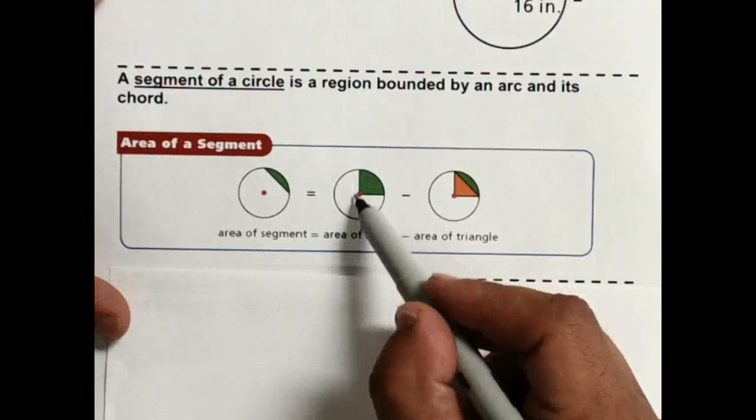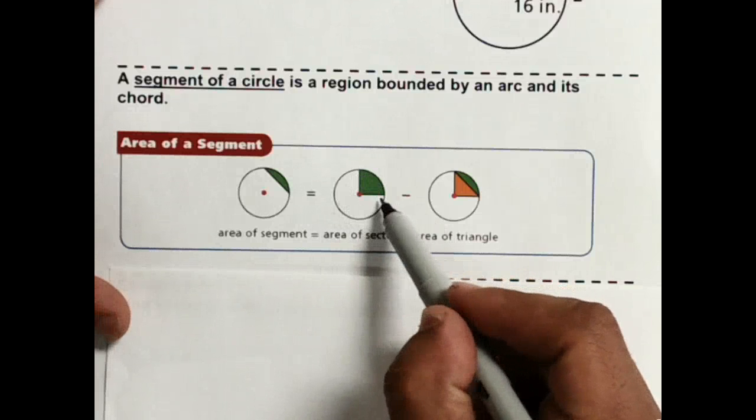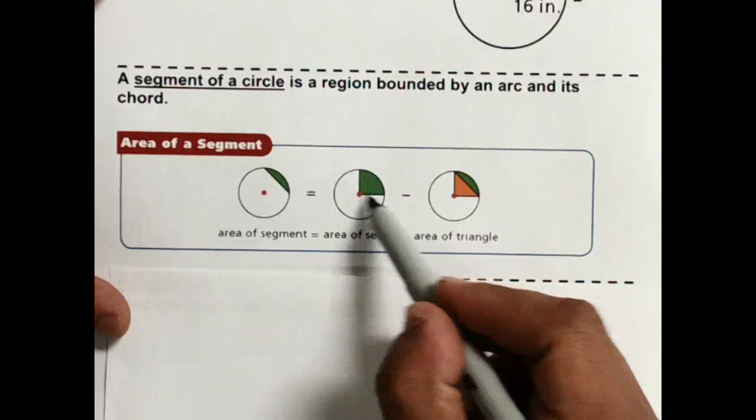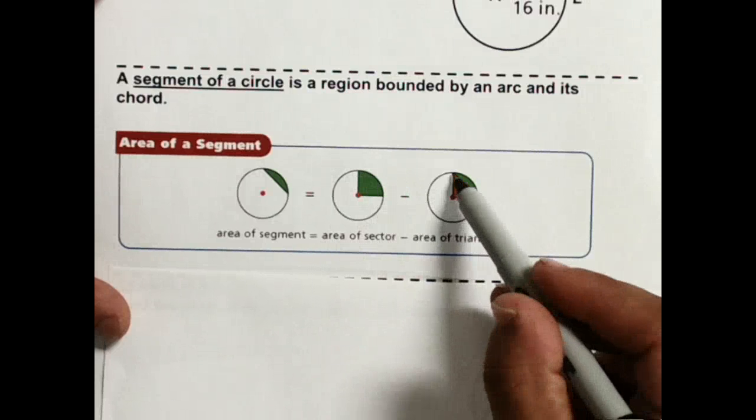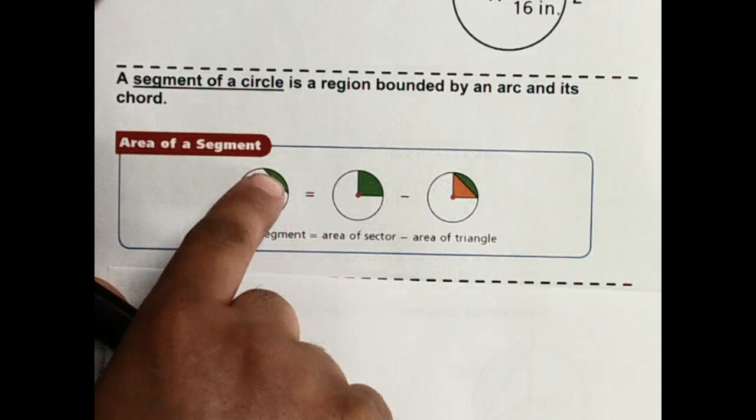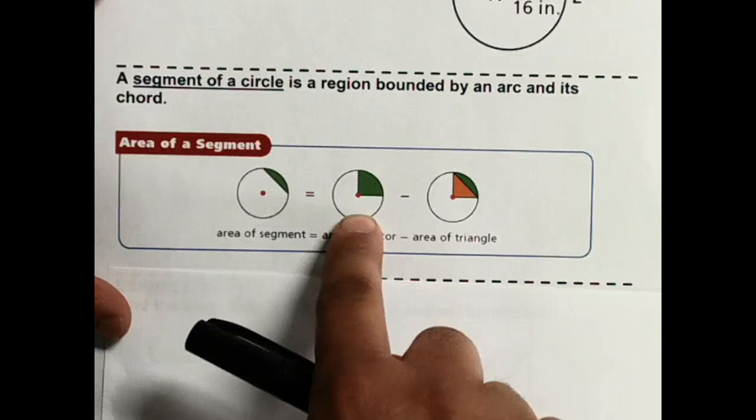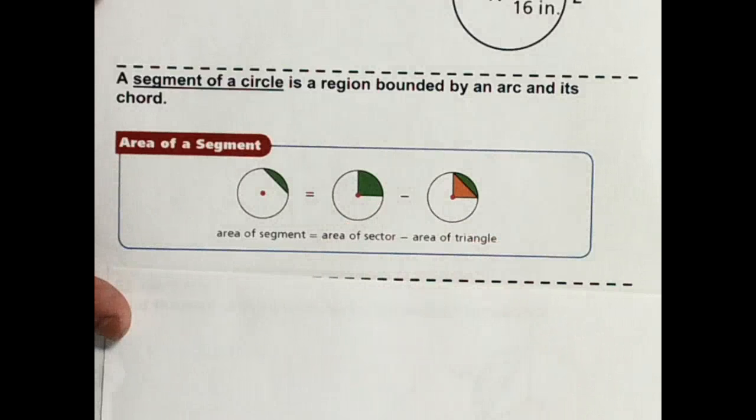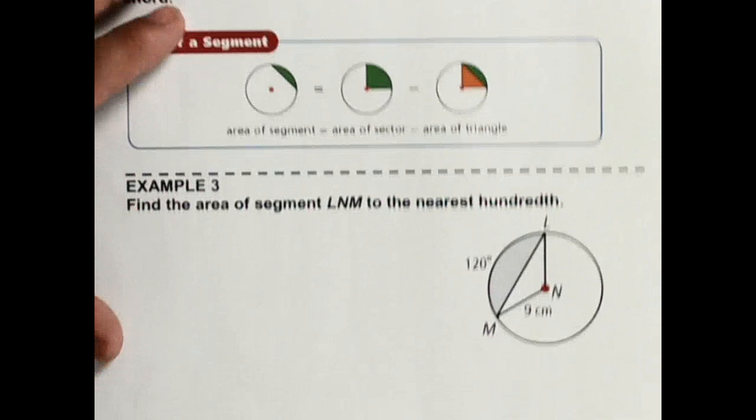The whole sector, if I were to make an angle, a central angle from the radius, that would be this piece right here. But then there's a triangle inside that. So this little piece right here that I'm looking for is really the area of the sector minus the area of the triangle. So let me show you what we're talking about.